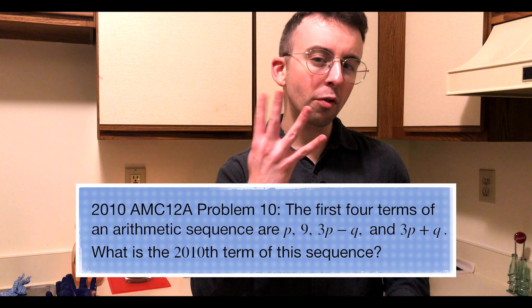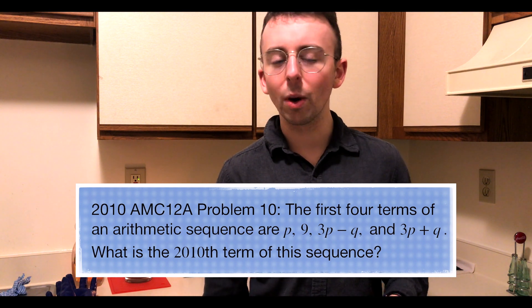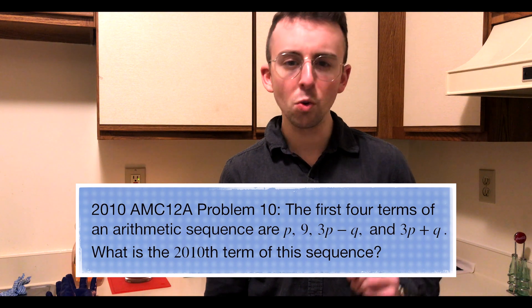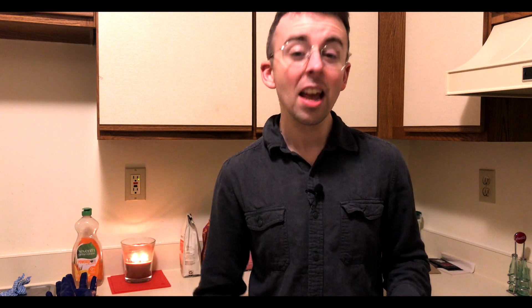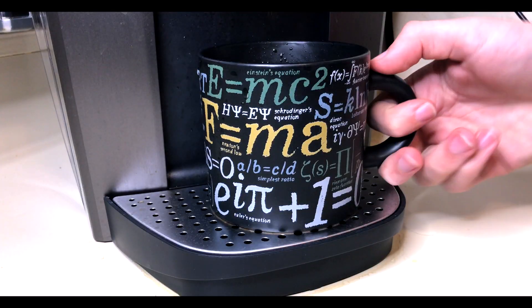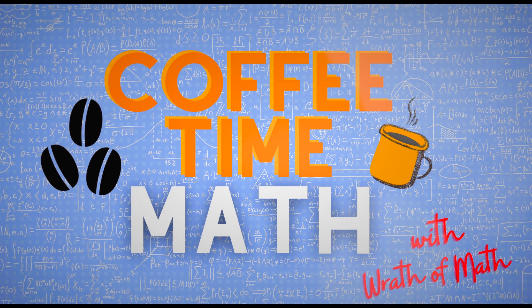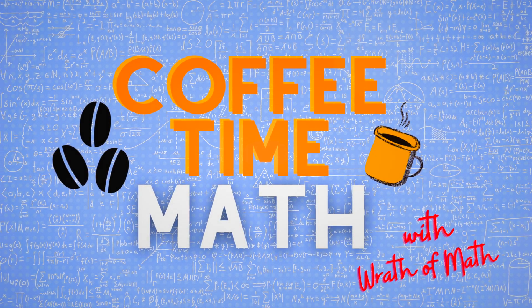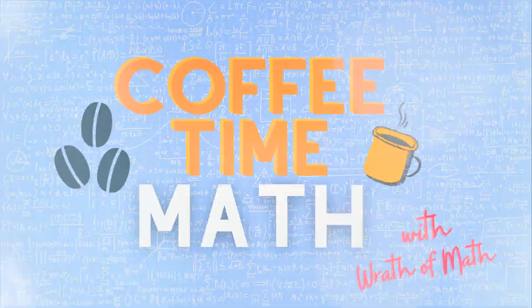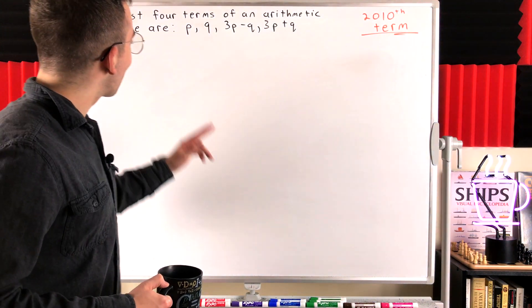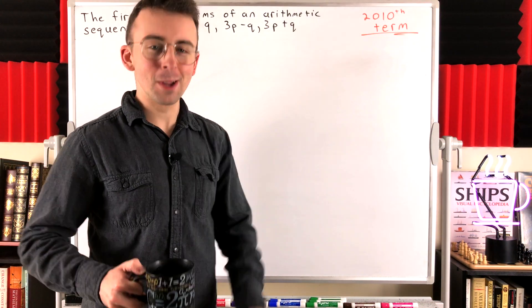Problem 10 gives us the first four terms of an arithmetic sequence in terms of two variables, and we're asked to find the 2010th term of the sequence. Problem 11 is just a fun exercise with logarithms. It's coffee time with Wrath of Math. There is nothing I'd rather be doing right now than solving this problem with you.